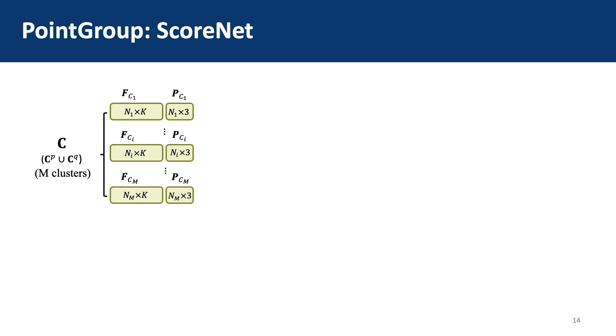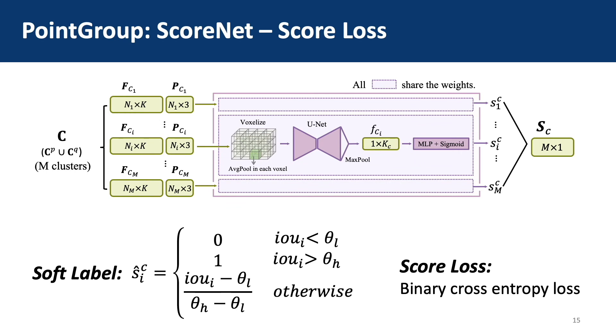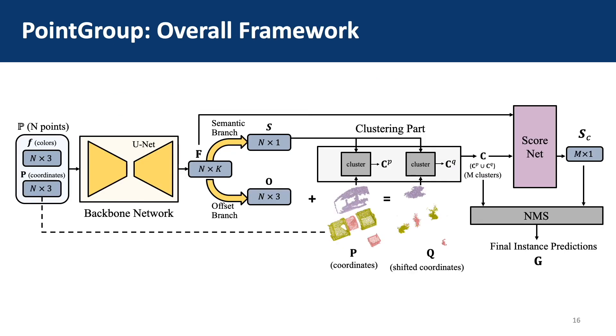The ScoreNet takes the candidate cluster set C as input and gives a score for each cluster. The scores indicate the quality of the clusters. To reflect the cluster quality in the scores, we use a soft label to supervise the predicted cluster scores. We then use the binary cross entropy loss as our score loss. After getting the cluster scores, we feed the candidates into an NMS process to get the final instance predictions.